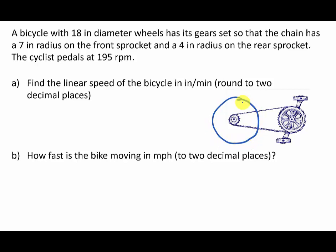Let's see what's going on here as we go 195 revolutions per minute because that's what we're starting with. We've got 195 revolutions per minute. Now that's what the cyclist is pedaling, so that's what this gear right here, how fast it's going around.